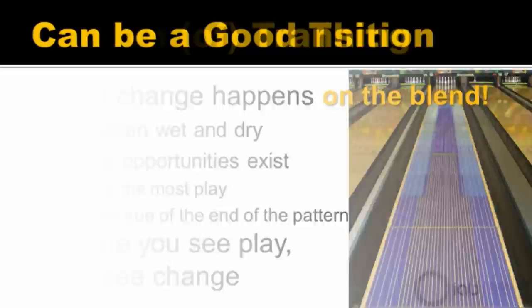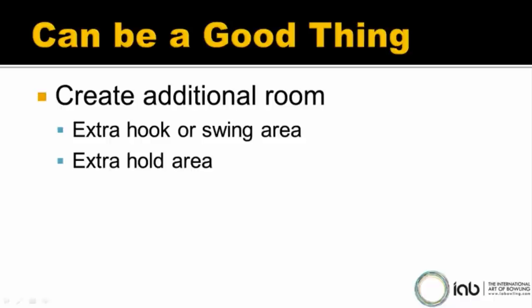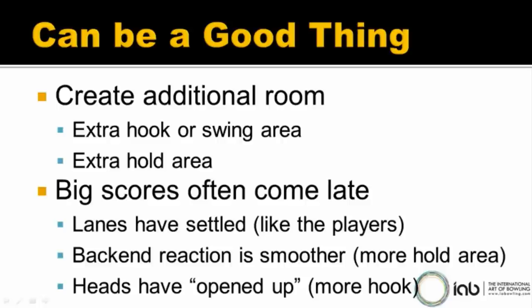This can be a good thing because it can create additional room. You can create a bit more hook or swing area if the lanes dry out a bit, or if the lanes carry down a bit, you can have a little bit of hold area and move out to take advantage of that. It depends what happens on the night and who you're bowling with. You will notice at league that big scores often come late — mainly because the lanes have settled, just like the players. The back-end reaction gets a little bit smoother and more predictable, usually because there's a little bit more hold area down lane. Sometimes the heads have opened up, meaning players have burnt a hole through the front of the lane and created a bit more of a hook spot — they can get inside and bounce off that and create some big numbers.